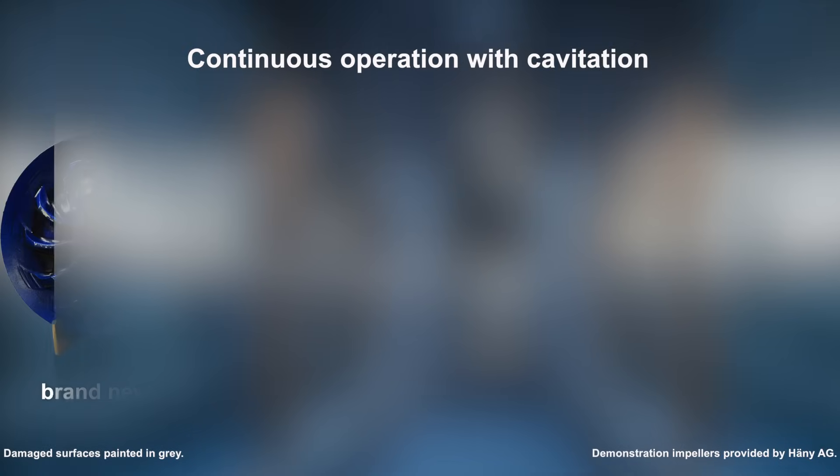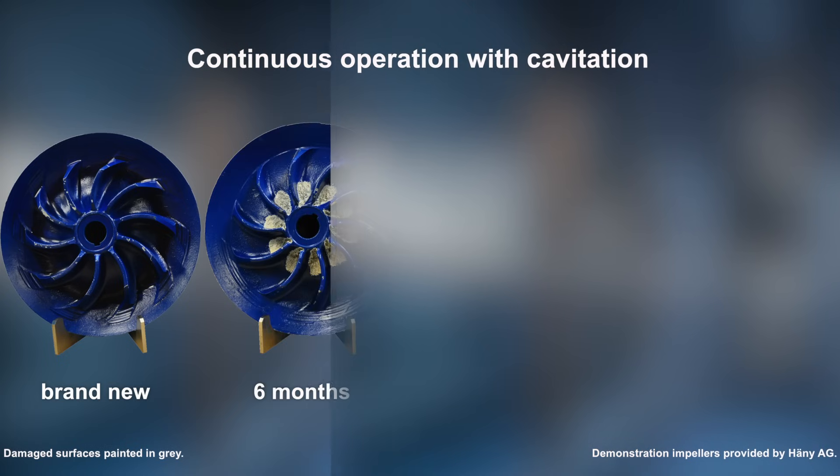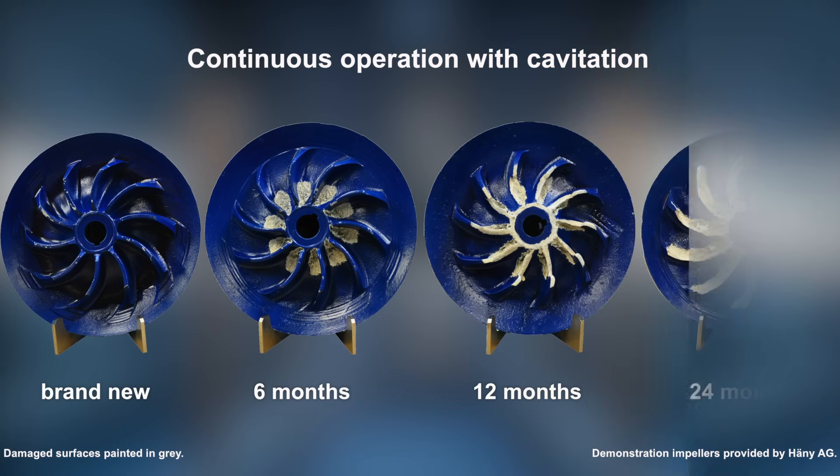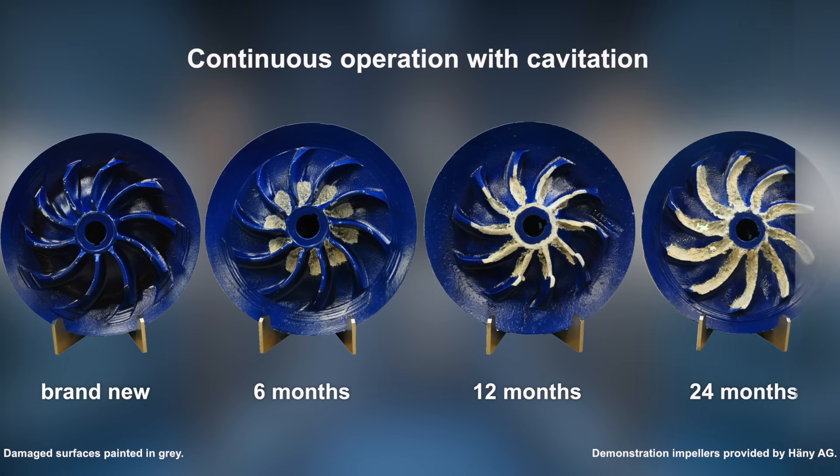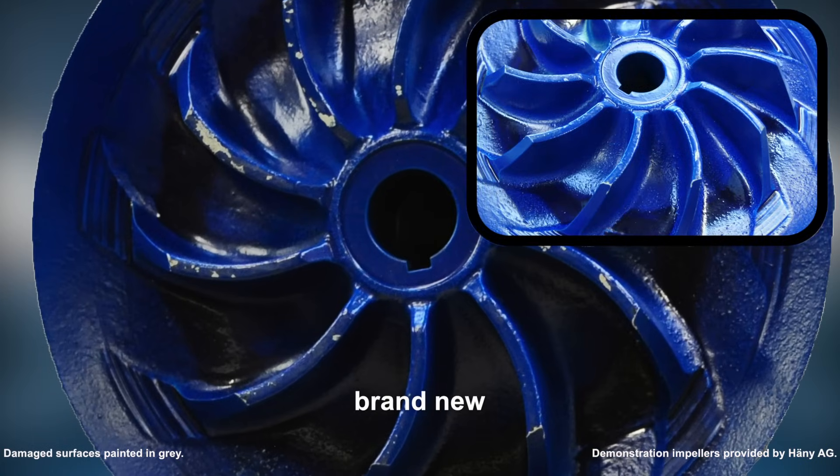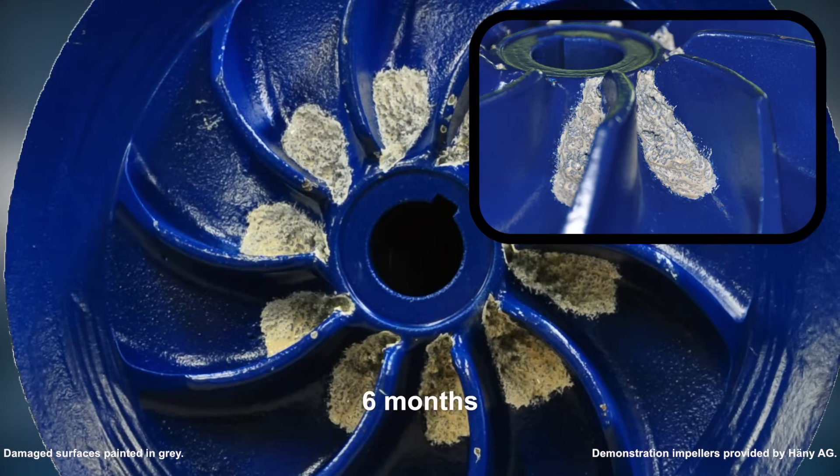We show a few examples of damage in pump impellers kindly provided by the Swiss pump manufacturer Herney. A brand new impeller to the left in comparison with an impeller having been continuously exposed to cavitation during 6 months, another impeller with damage from 12 months operation in cavitation and one from 24 months. The new impeller shows the geometry as it should be under normal operation without cavitation. After 6 months of operation under cavitation, material has been eroded in the centre of the wheel. The respective areas are highlighted with grey colour. The impeller blades are undamaged.